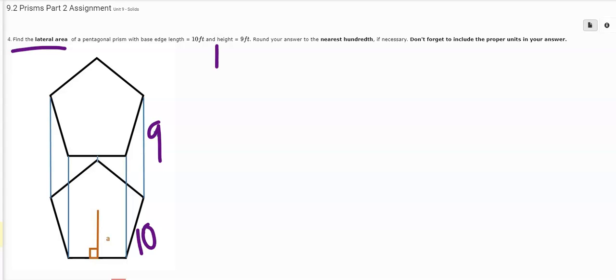So to find the lateral area, let's talk about the formula. Lateral area is just the perimeter times the height. The perimeter is going to come by taking each of the side lengths and adding them up.